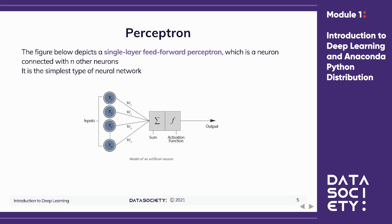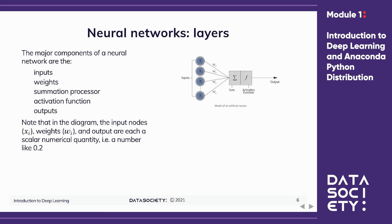The figure below is a single layer feedforward perceptron — the simplest type of neural network. A neural network has the following components: inputs, weights, summation processor, activation function, and outputs. We'll go through these each individually in the next few slides. Note that in the diagram, the input nodes Xi, weights Wi, and output are all each a scalar numerical quantity — for example, a number like 0.2.